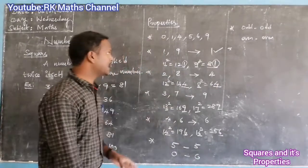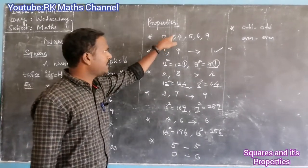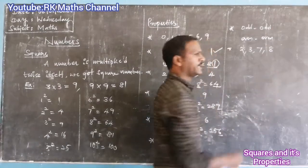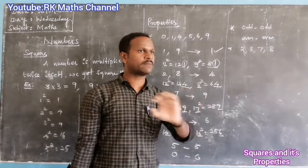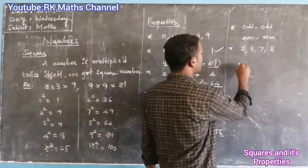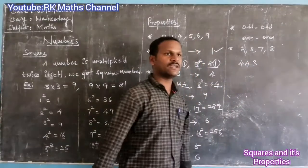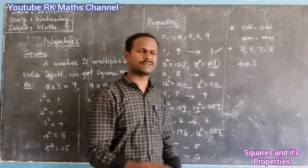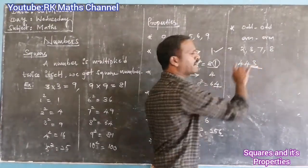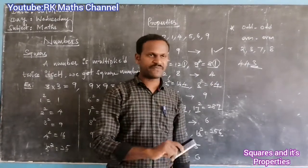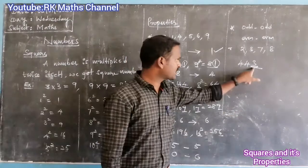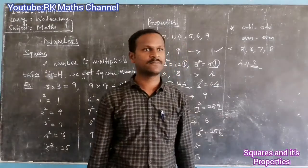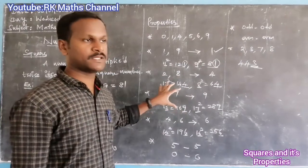Next property: for a perfect square, the unit place can only be 0, 1, 4, 5, 6, or 9. If the unit place is 2, 3, 7, or 8, then it is not a perfect square. This is the key property to identify perfect squares.